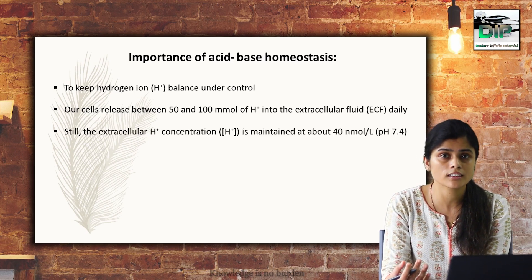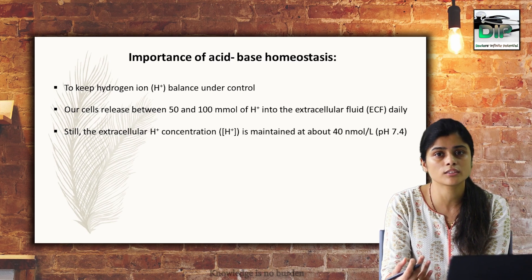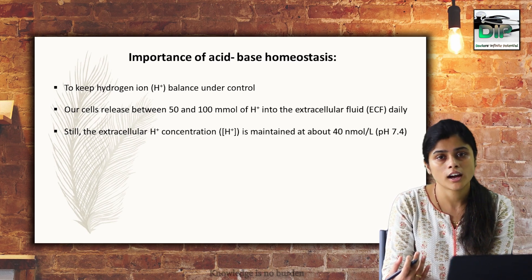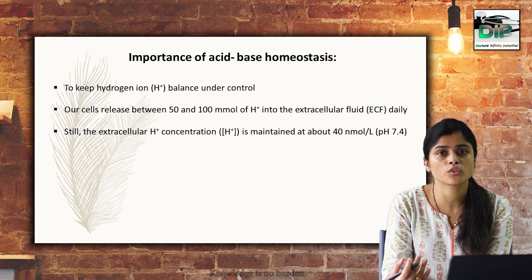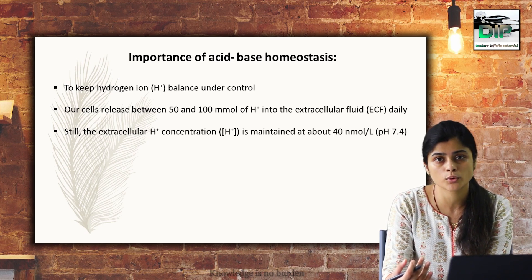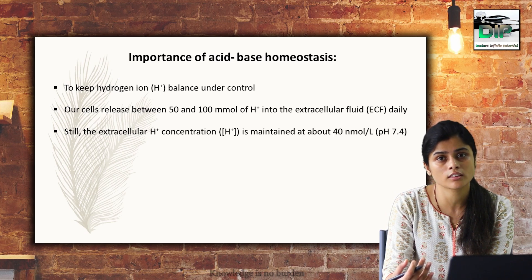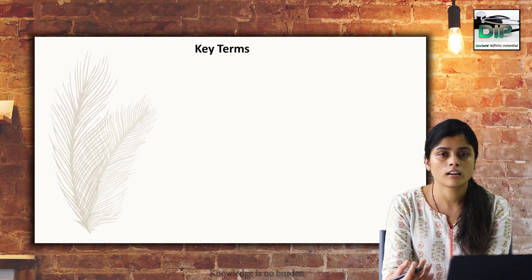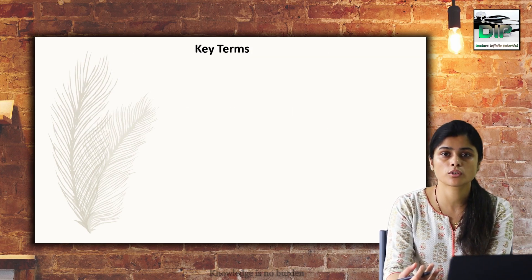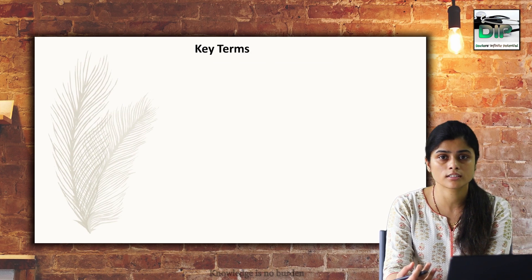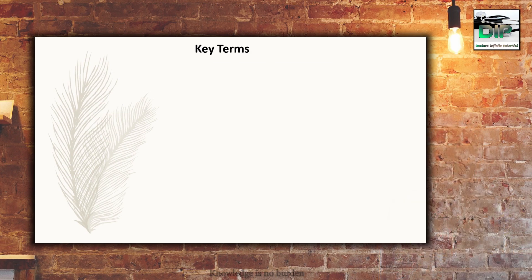If you look at pH — the negative logarithm of hydrogen ions — it is 7.4, which is equivalent to 40 nanomoles per litre of proton. So from a production of 50 to 100, it is maintained at 40 nanomoles per litre. This is an amazing job done by the body in collaboration with buffers, the lungs, and the renal system to maintain acid-base physiology.